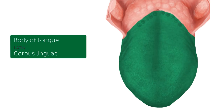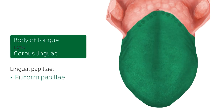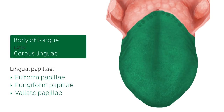The mucosa of the body of the tongue is covered in structures known as the lingual papillae — plural for papilla. The list includes filiform papillae, fungiform papillae, valate papillae, and foliate papillae. These papillae contain taste buds, with the exception of the filiform papillae.